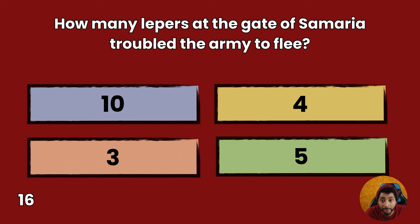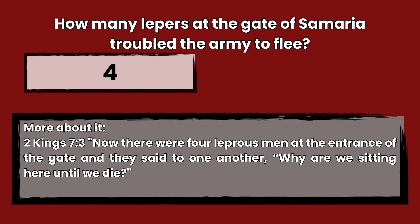Question 16: How many lepers at the gate of Samaria troubled the army to flee? 10, 4, 3, or 5? Answer: 4. 2 Kings 7:3 — Now, there were four leprous men at the entrance of the gate, and they said to one another, Why are we sitting here until we die?